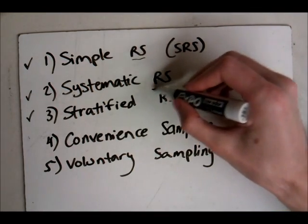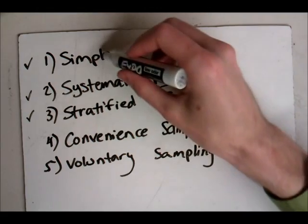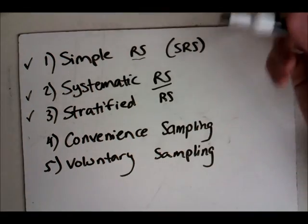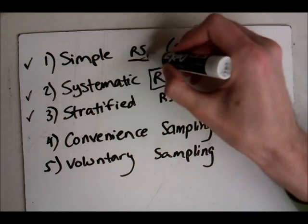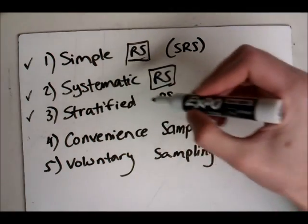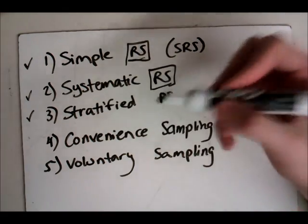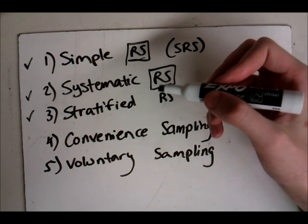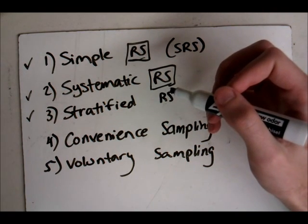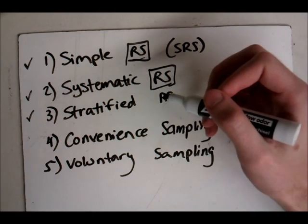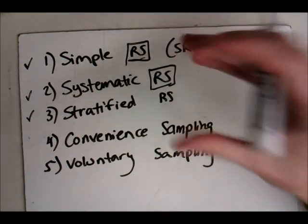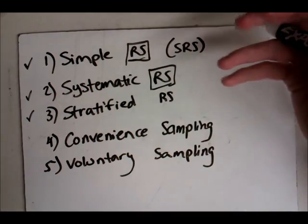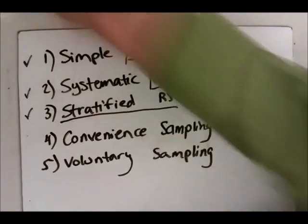The third one kind of includes one of the first two depending on which one you like better or which one you can afford. A stratified is where you section up your people into certain groups. We call them strata, and these groups have to be homogeneous, meaning that everyone in a group is the same.